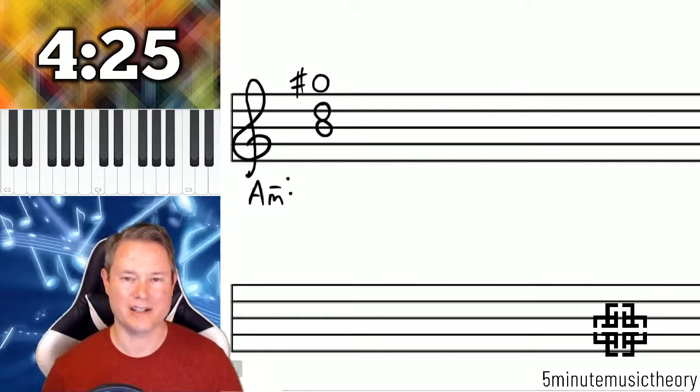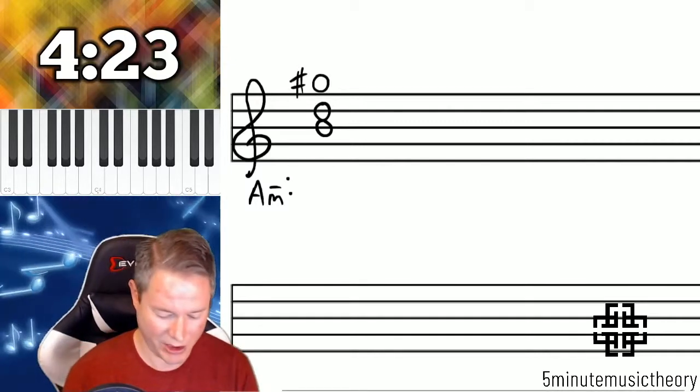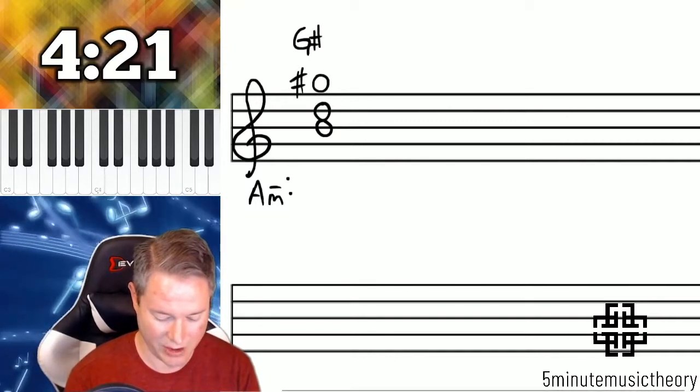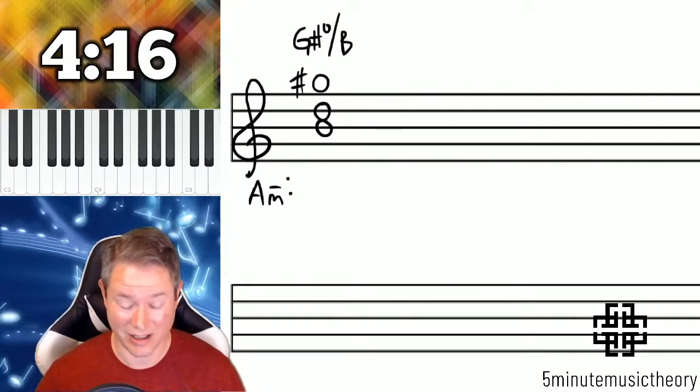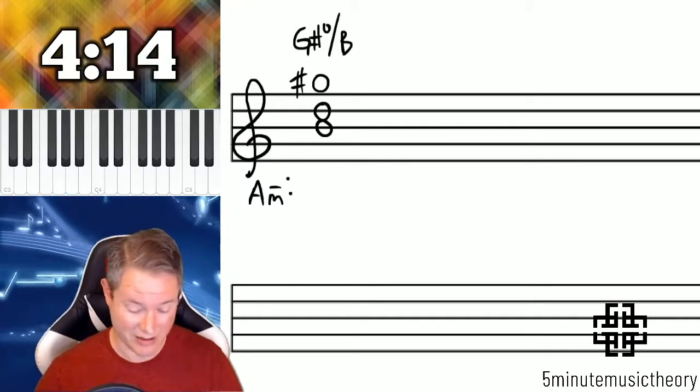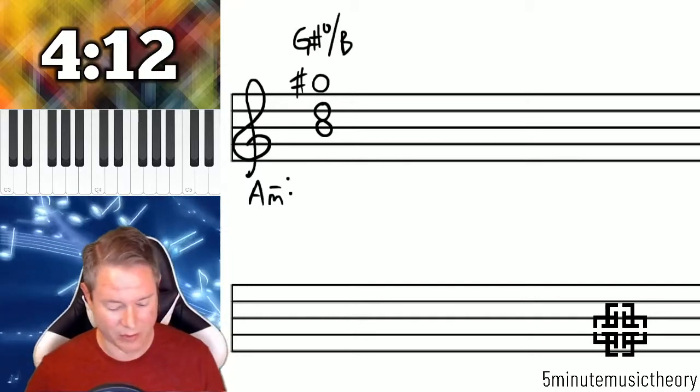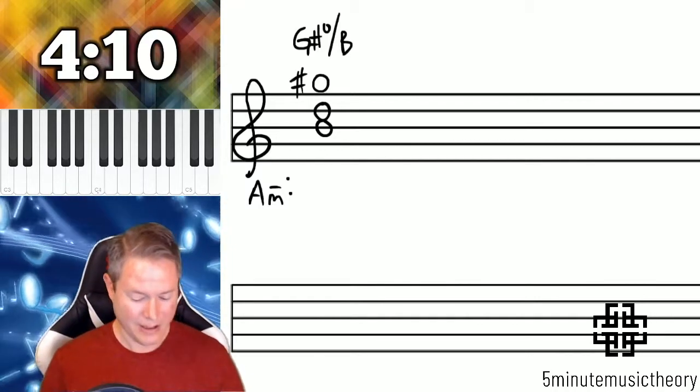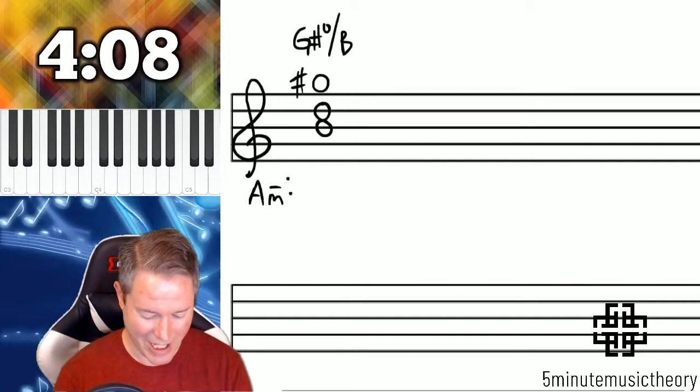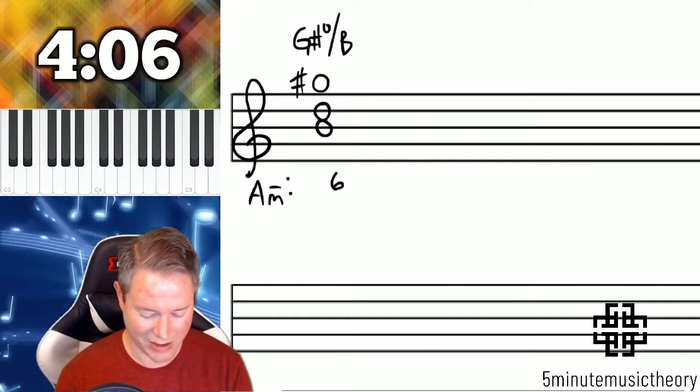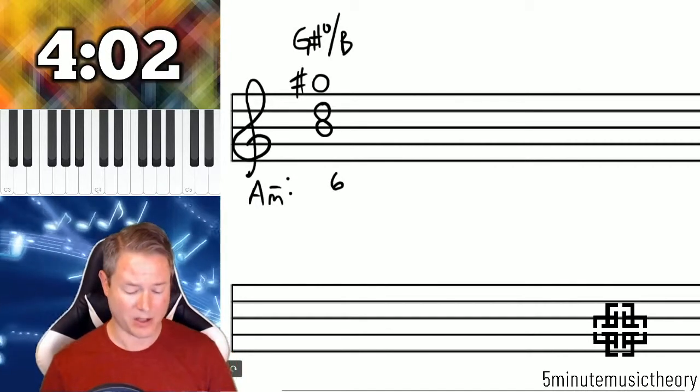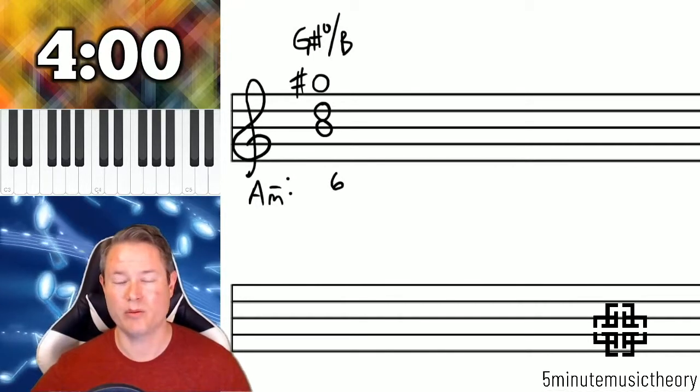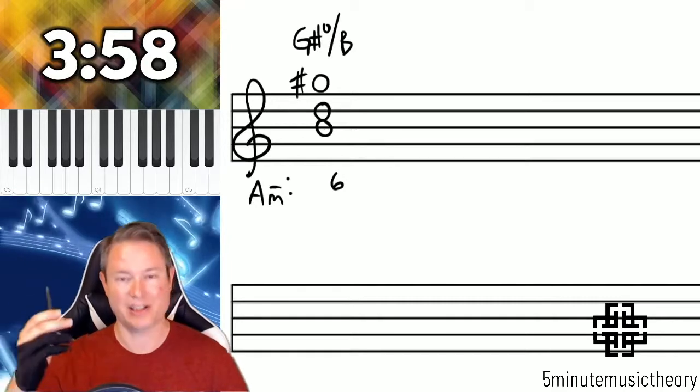This chord is a G sharp diminished triad. It's G sharp diminished over B, which is actually a diatonic triad in the key of A minor because of its raised leading tone. We'll talk about that when we get to diatonic functions. This chord in the figured bass, remember the long version would be 6-3, but we don't need the 3 because we abbreviate it. So if we just put 6, it would be implied that there's a 6th above the bass.